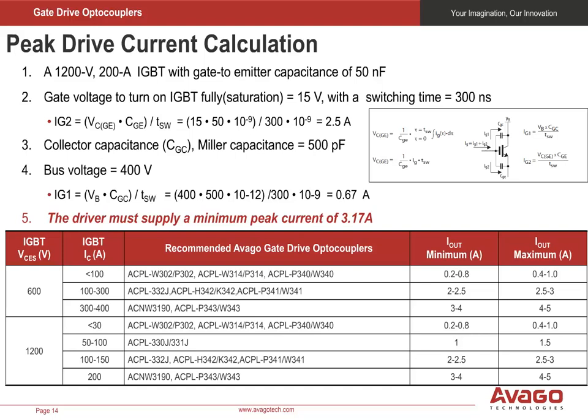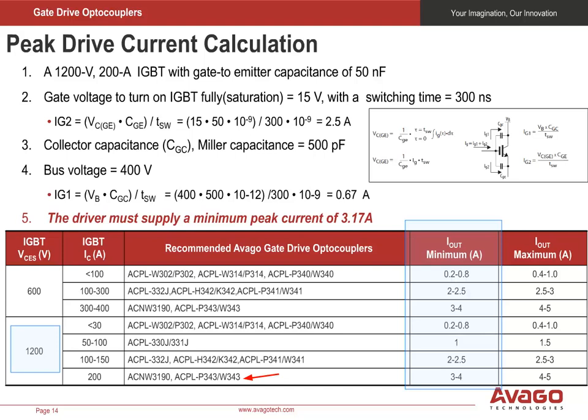Let's calculate the peak gate current through the gate emitter capacitor and the gate collector capacitor. The total current needed is the sum of both currents. TSW here is the shortest turn-on time required. The calculated IG2 is 2.5 amps and IG1 is 0.67 amps. The gate driver must be able to deliver a total peak current of 3.17 amps, assuming a TSW of 300 nanoseconds. A suitable driver would be the ACNW-3190, ACPL-P343, or ACPL-W341.